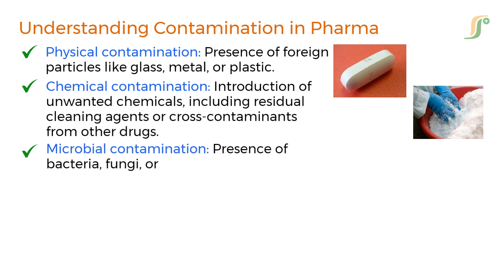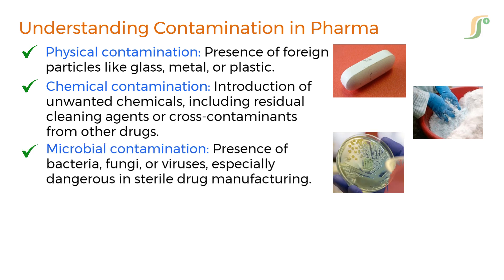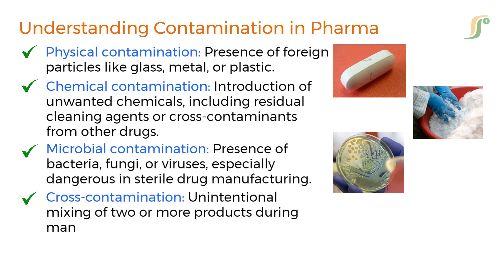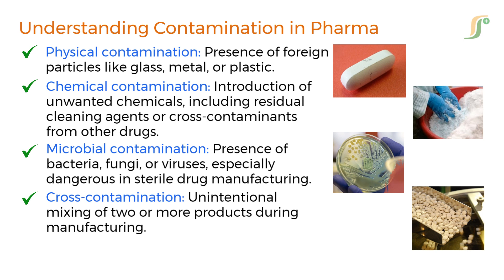Third is microbial contamination, which includes the presence of bacteria, fungi, or viruses — especially dangerous in sterile drug manufacturing. Fourth is cross-contamination, which includes the unintentional mixing of two or more products during manufacturing. These contaminants can compromise the safety and efficacy of the final product, making robust contamination control a non-negotiable aspect of pharmaceutical manufacturing.